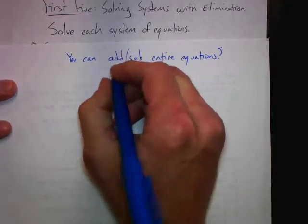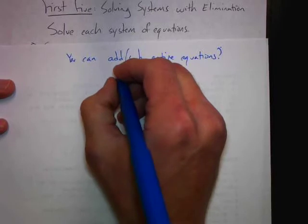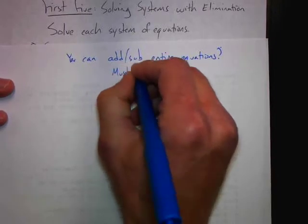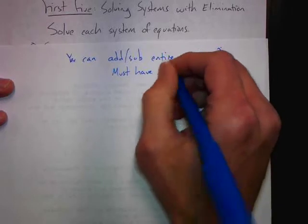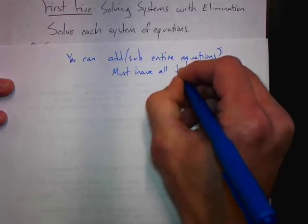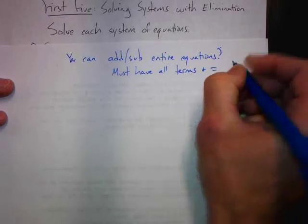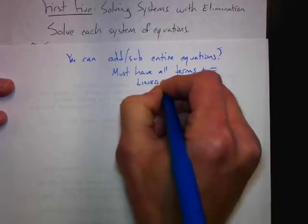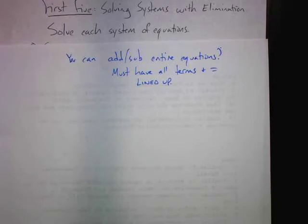One thing has to happen if you're going to do that: everything must be lined up. You must have all your terms lined up, and the equal sign. So all the terms and the equal sign must be lined up, and if that's the case, you can add or subtract entire equations.